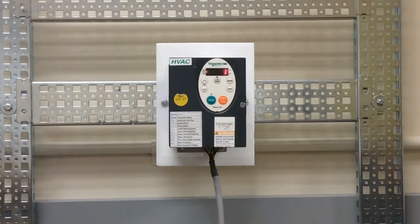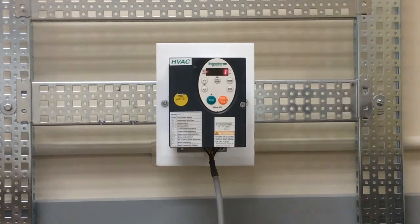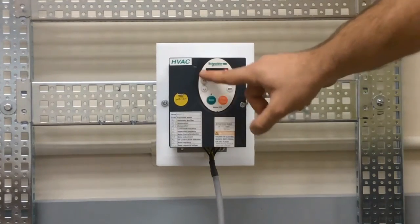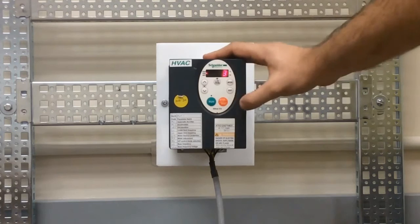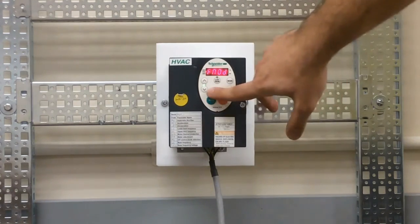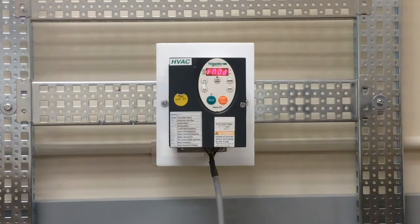You will have options one, two, three, four. We want to select number three for the up and down arrow keys. Press enter, and you'll notice that the LED on the up and down arrow keys will light up.